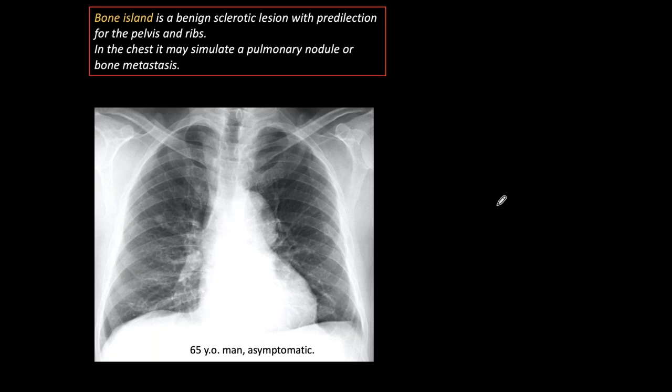The next condition, which is reasonably common in the chest, is bone islands. Bone islands are sclerotic lesions with predilection for the pelvis and ribs. When they occur in the ribs, if they are not very obvious, they may simulate a pulmonary nodule or a bone metastasis.